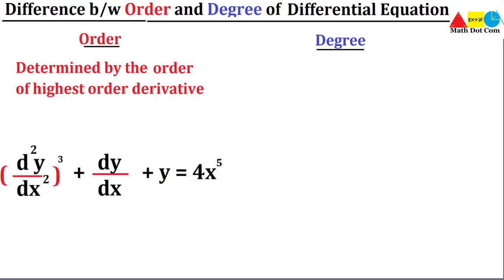Here we have an example of a differential equation and I'll ask you to determine the order of this differential equation. According to the definition, it is determined by the order of the highest order derivative, so we have to find the highest order derivative. Here you can find the order by checking the value of each term — for example, d²y/dx² has a two which represents the order. In the first term we have order two, in the second term we have order one.